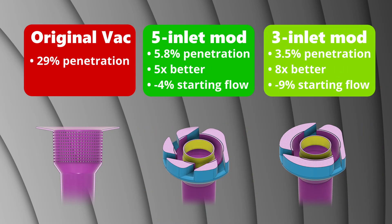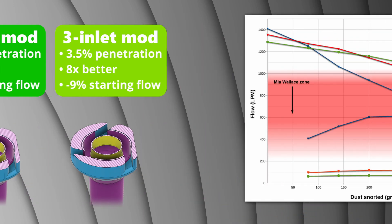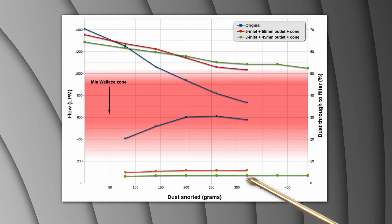So we've improved the vacuum substantially, but not as good as I was hoping. We started at 29% and improved it to 5.8 or 3.5%, which is a 5 to 8 times improvement with only a 4 to 9% drop in initial flow. After snorting 320g of dust, our flow rates are miles ahead of the original vac.